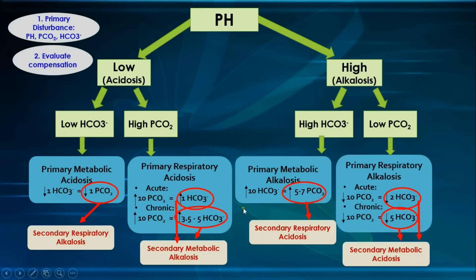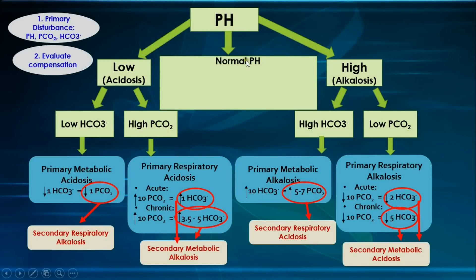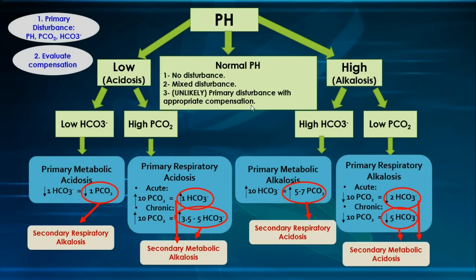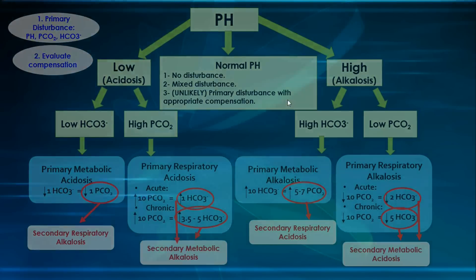One final point: if the pH is normal, does that mean the patient is normal? Not necessarily. There are three possibilities: first, no disturbance and a truly normal patient; second, a mixed disturbance balancing out the pH, such as mixed primary metabolic acidosis and primary respiratory alkalosis, which can inappropriately return pH to normal; third — unlikely — a primary disorder with appropriate compensation. Compensation usually returns pH only near-normal, except in some cases of respiratory alkalosis and respiratory acidosis, which can actually return pH to normal with appropriate metabolic compensation.